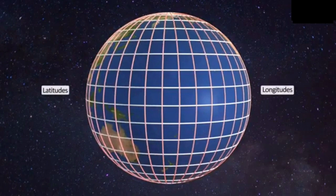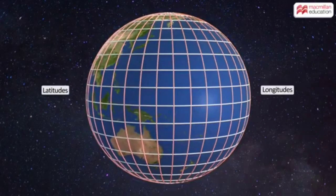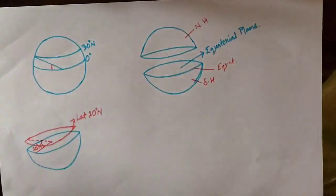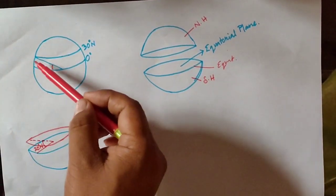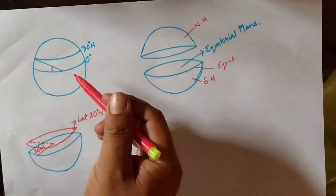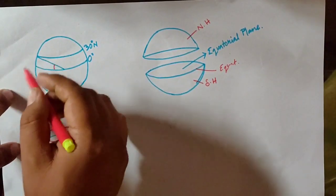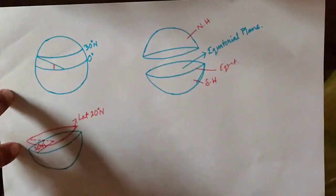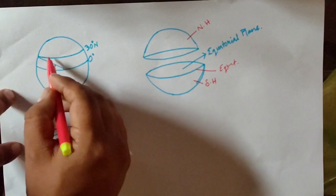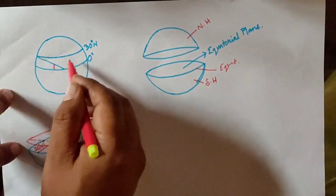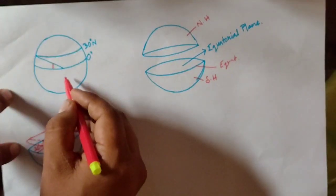Latitude is the angular distance from the center of the earth towards the north and south of the equator. For example, if we draw a line with an angle of 30 degrees north to the globe surface, then all the places falling on that particular line will have an angle of 30 degrees from the center of the earth.